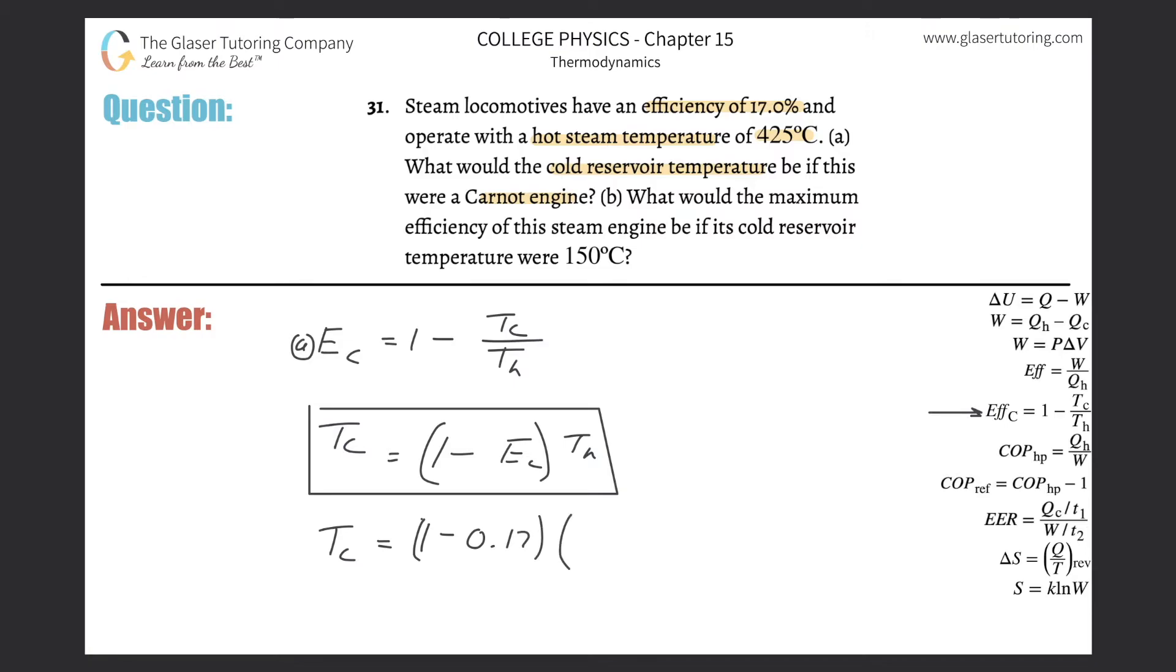And then multiplied by the hot—it has to be in Kelvin. Please do not forget that. So this is 425 plus 273. And all we have to simply do now is plug it into the calculator. So basically we're going to take 1 minus 0.17, that's 83%, and multiply that by 425 plus 273. And this is about 579. So there's about 579 Kelvin.